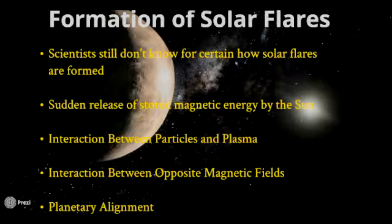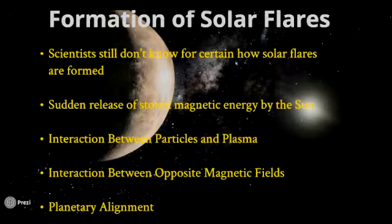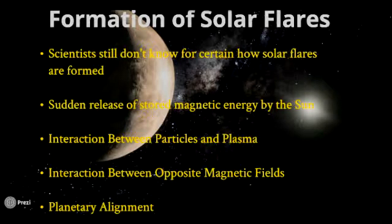Another theory includes the interaction between particles and plasma. Some scientists believe that solar flares are created when accelerated electrons and other charged particles interact with plasma on the sun. Other theories include the interaction between opposite magnetic fields.